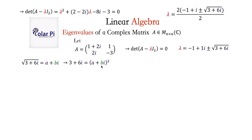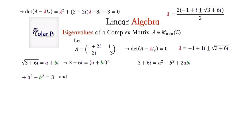Squaring both sides, we get this, and obviously we have to foil on this part. If you foil and then collect the real parts of (a plus bi) squared, the real parts are going to look like this and then the imaginary part is going to look like this. Now we have two complex numbers that are equal. Two complex numbers are equal if their real parts are equal — so 3 equals a squared minus b squared — and if their imaginary parts are equal — so 6 equals 2ab. Very importantly, from the onset when we wrote this down, a and b are real numbers.